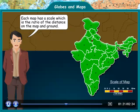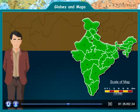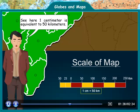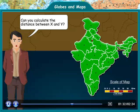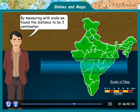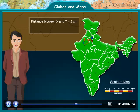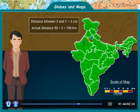Each map has a scale which is the ratio of the distance on the map and the ground. See here, 1 centimeter is equivalent to 50 kilometers. Can you calculate the distance between X and Y? By measuring with a scale, we found the distance to be 3 centimeters. Therefore, the actual distance is 50 into 3, which equals 150 kilometers.